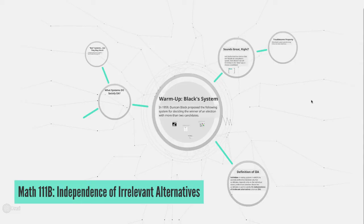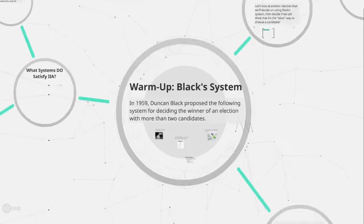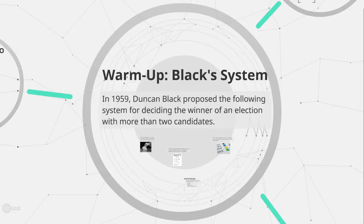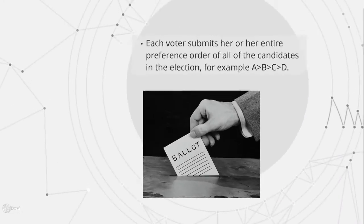At the start of chapter 4 in our text, they introduce a really interesting new system we haven't looked at before that seems to combine two of the features that we've really been looking for. Today's topic overall is going to be on something called independence of irrelevant alternatives, which is a criterion we haven't considered before that we might want to see in an election. As a warm-up, this new system proposed by Duncan Black in the 50s starts with everybody giving their preference order, and we'll collect the full set of preference orders of all voters into a preference schedule.